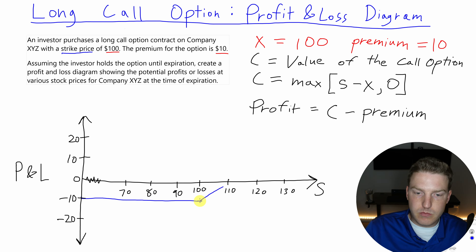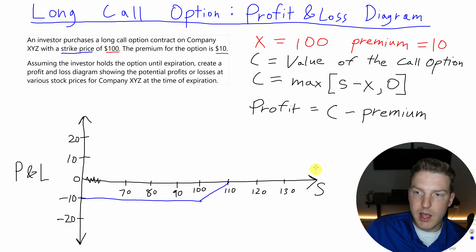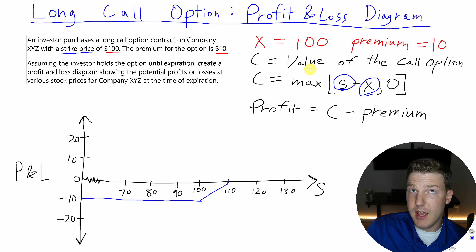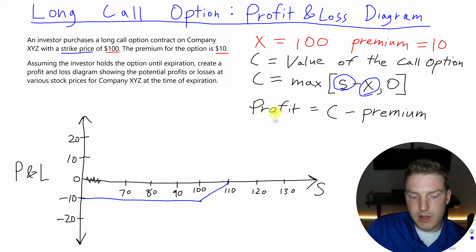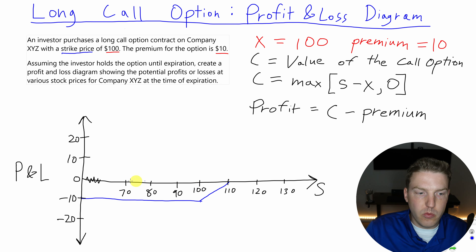Once we start getting past $100, we start to recoup some of our losses. At $110 is our break-even point. If the underlying stock price S equals 110 and X equals 100, then C equals 110 minus 100, so the call option value is $10. Then profit equals $10 minus the $10 premium, which is zero. So when we hit $110, we are exactly at zero profit and loss.